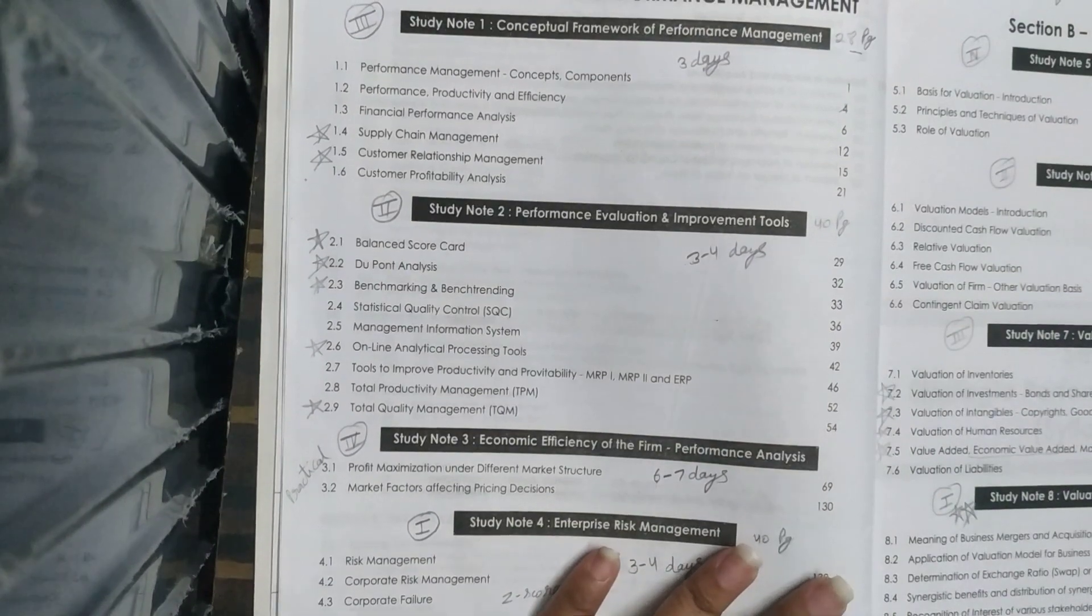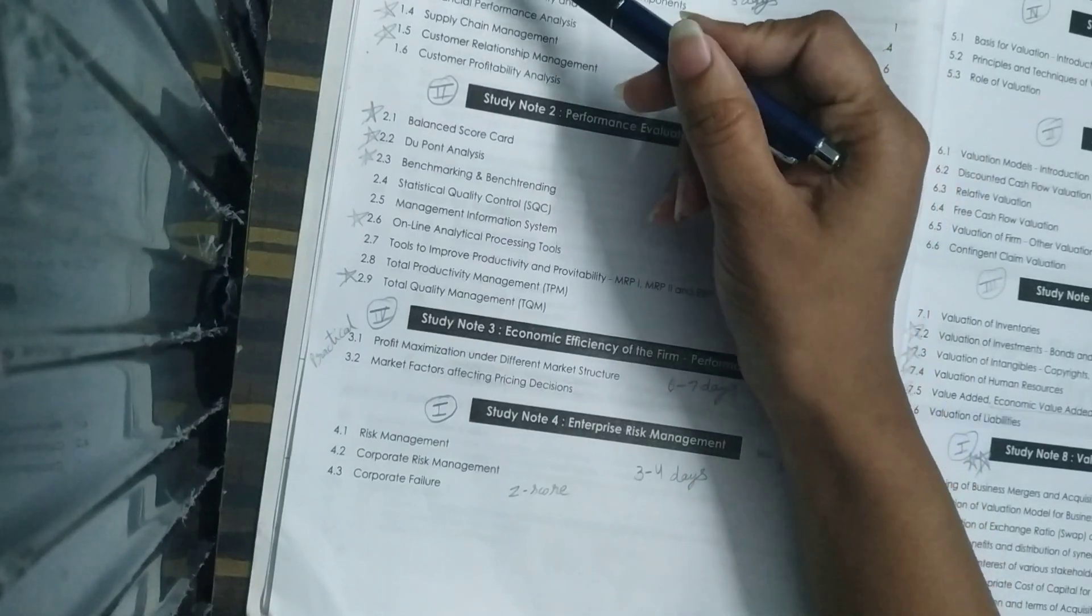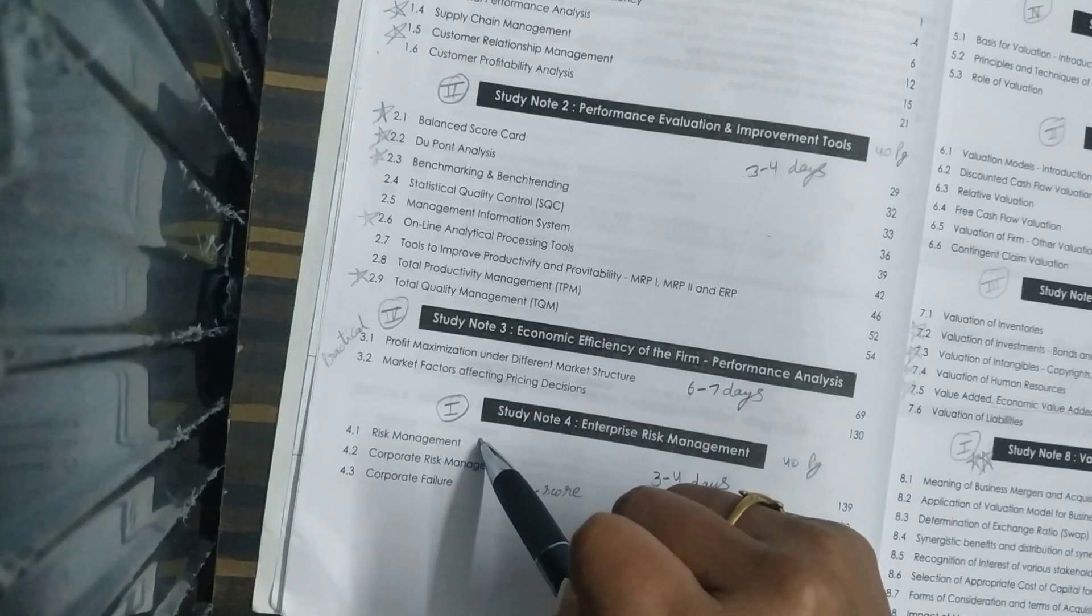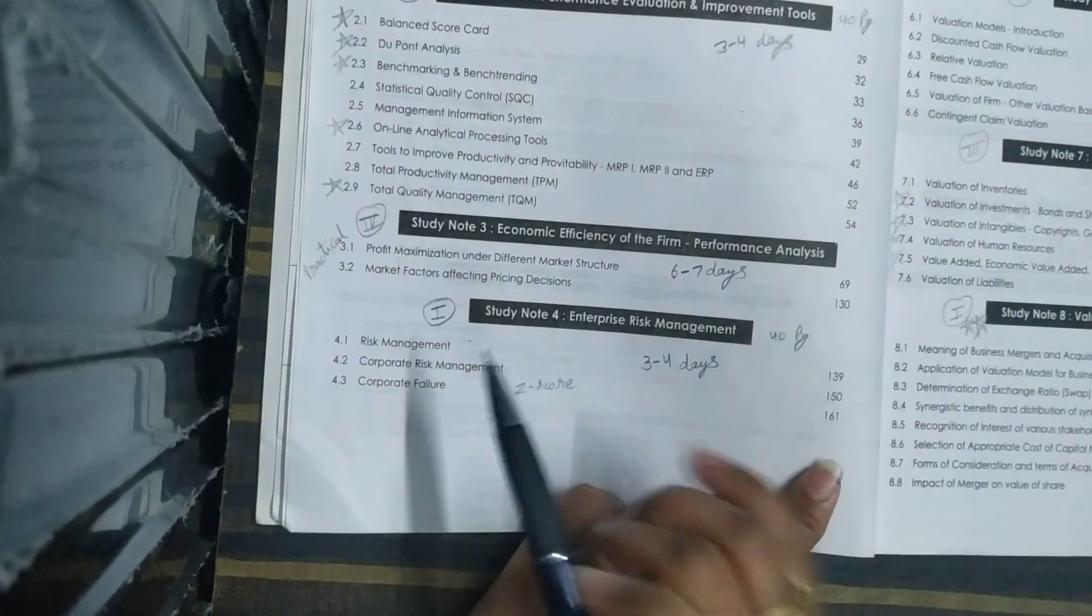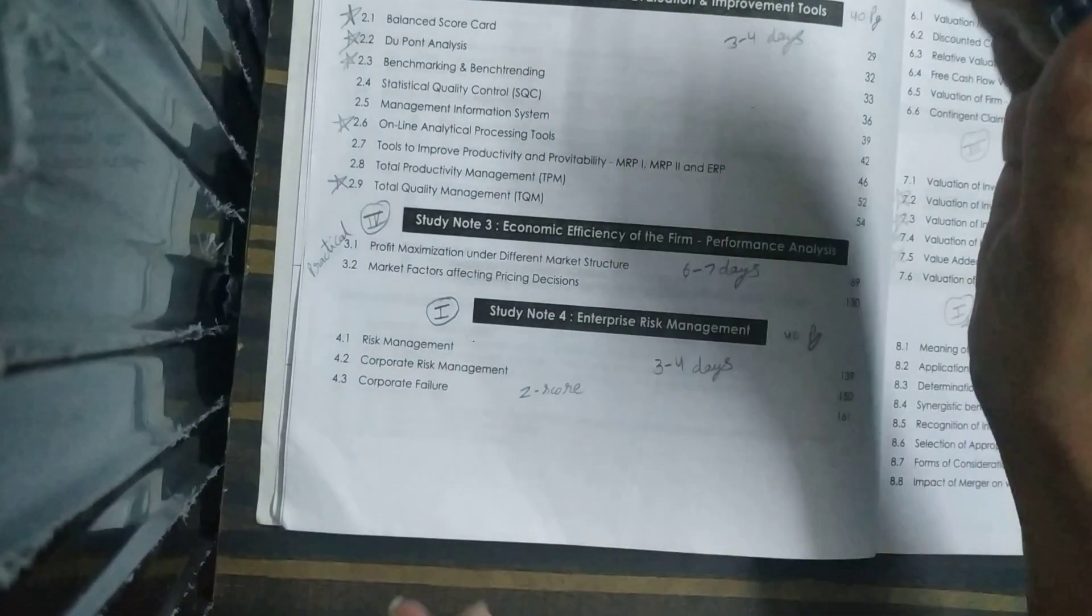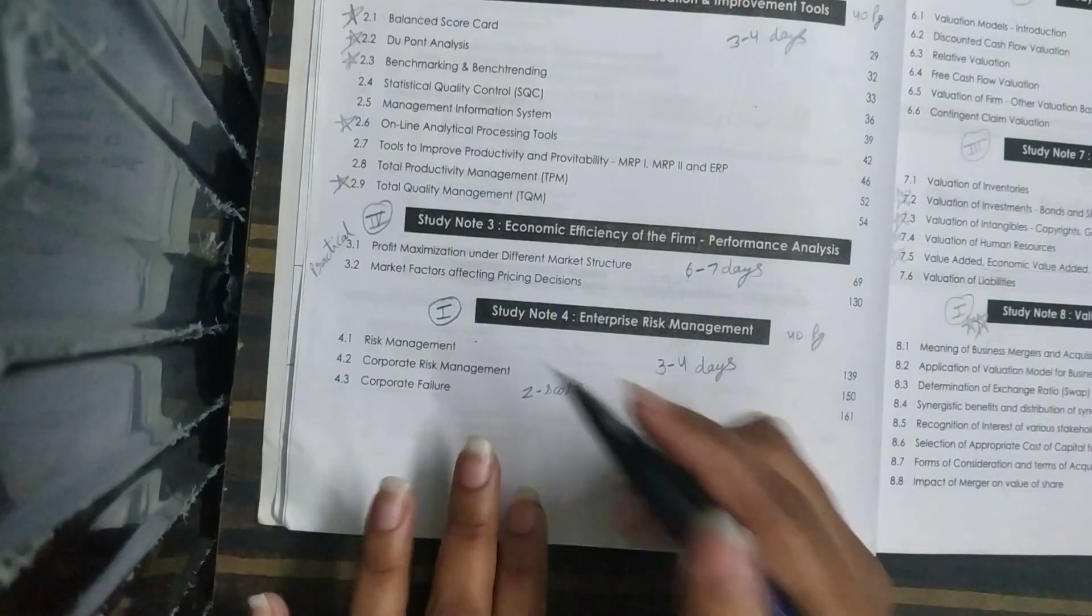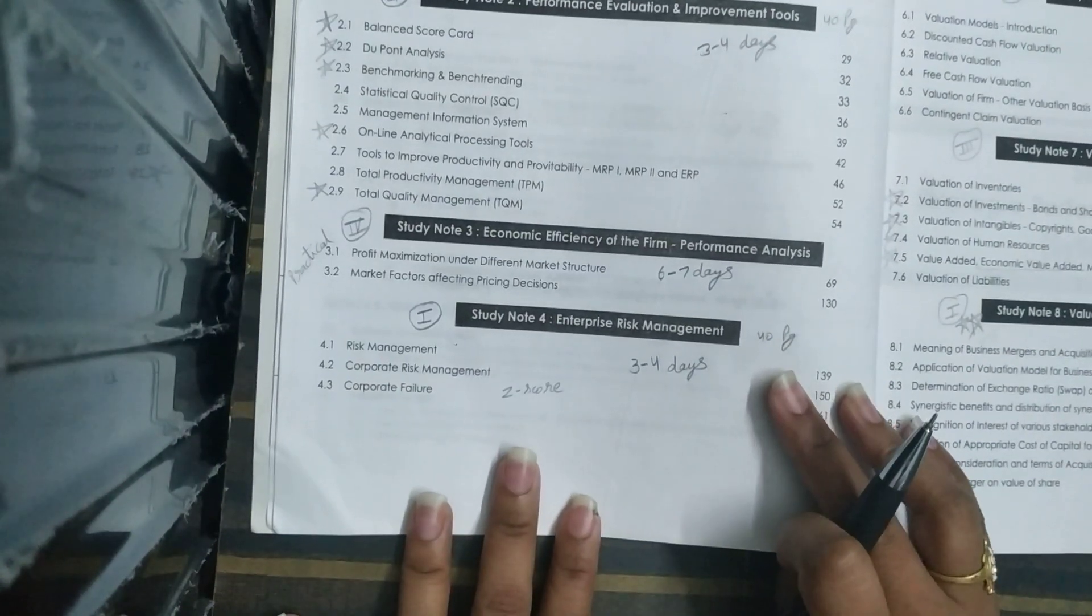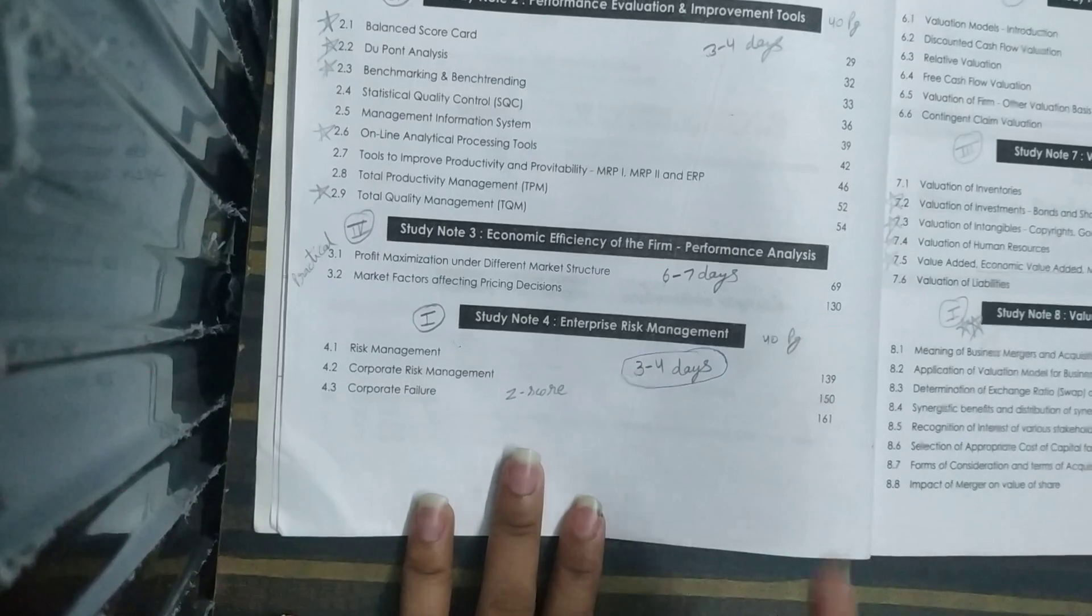You can see here, I have made a weightage list. Study Note 4, which is Enterprise Risk Management, covers almost 40 pages in the study material. I have estimated that any average student will cover it in 3 to 4 days if he reads 10 pages daily with notes.